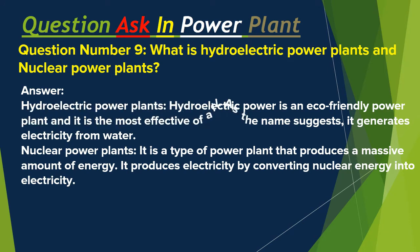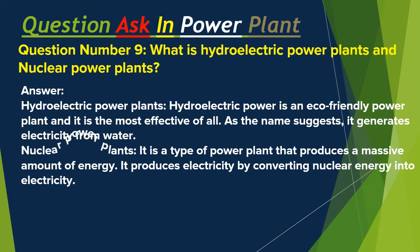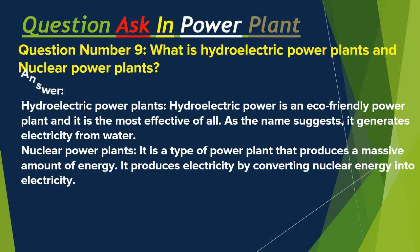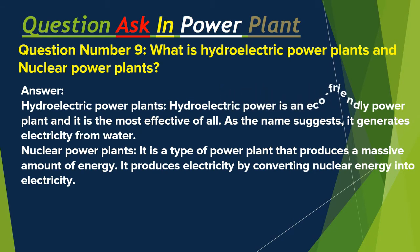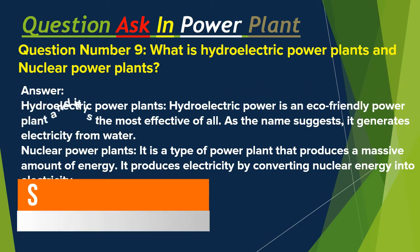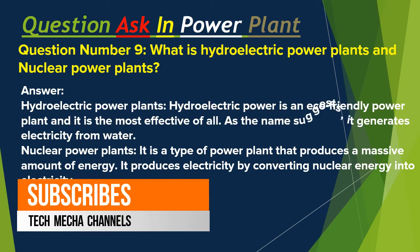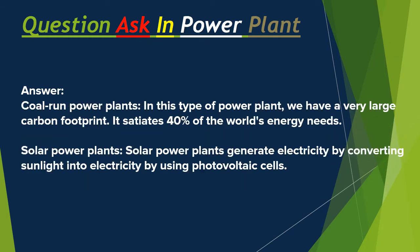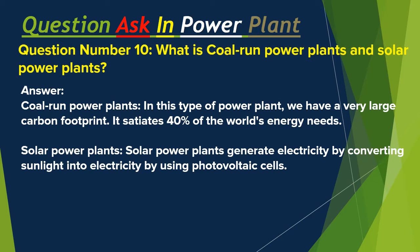Question number nine: What are hydroelectric power plants and nuclear power plants? Answer: Hydroelectric power plants — hydroelectric power is an eco-friendly power source and it is the most effective of all; as the name suggests, it generates electricity from water. Nuclear power plants — it is a type of power plant that produces a massive amount of energy; it produces electricity by converting nuclear energy into electricity.